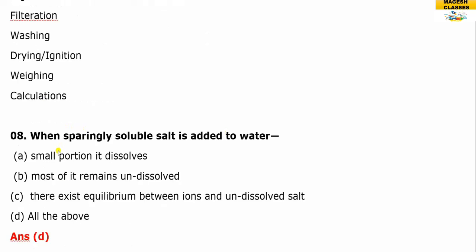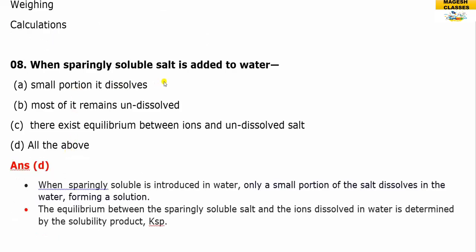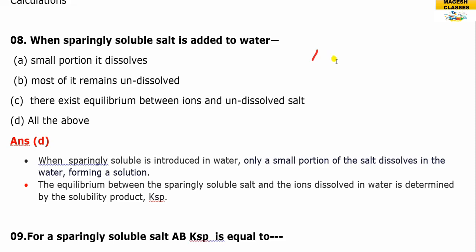Question eight: when a sparingly soluble salt is added to water, a small portion dissolves and most remains undissolved. An equilibrium exists between the ions and the undissolved salt. For example, AB is a sparingly soluble salt, and equilibrium exists between the ions and the un-ionized part.